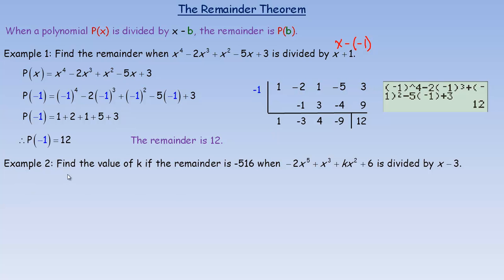In the second example, we're asked to find the value of k if the remainder is negative 516. Notice that k is the coefficient of the x squared term in the polynomial, and the polynomial is divided by x minus 3.